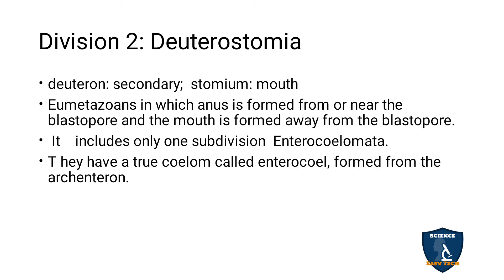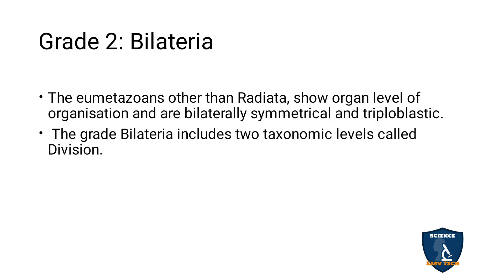The second division is Deuterostomia — 'deutero' means secondary mouth. Protostomia has the first mouth, while Deuterostomia has a secondary mouth with two openings: one for the mouth and one for the anus. In Deuterostomia, only Enterocoelomate is seen — a true coelom derived from the archenteron.